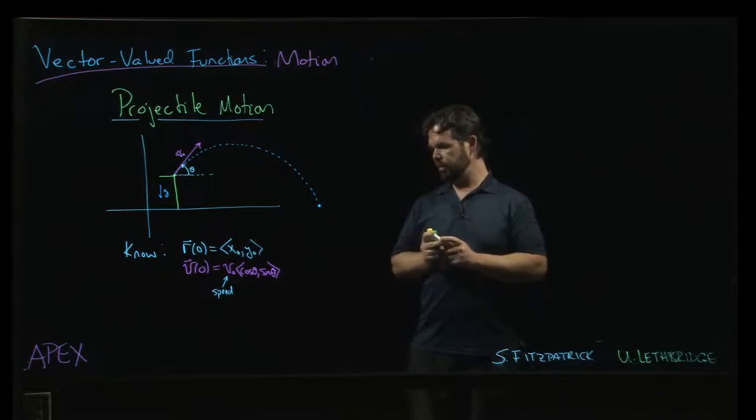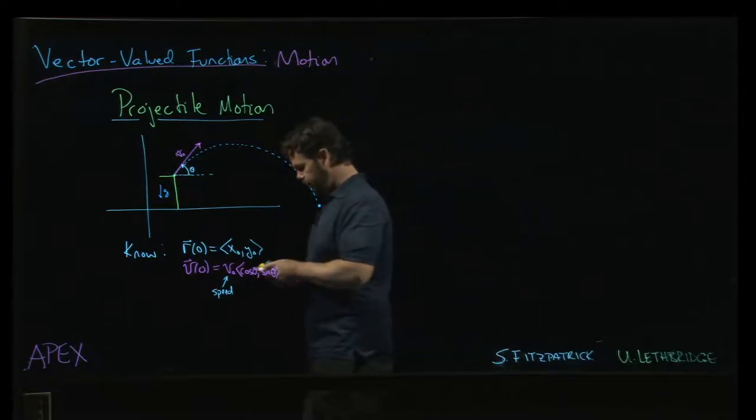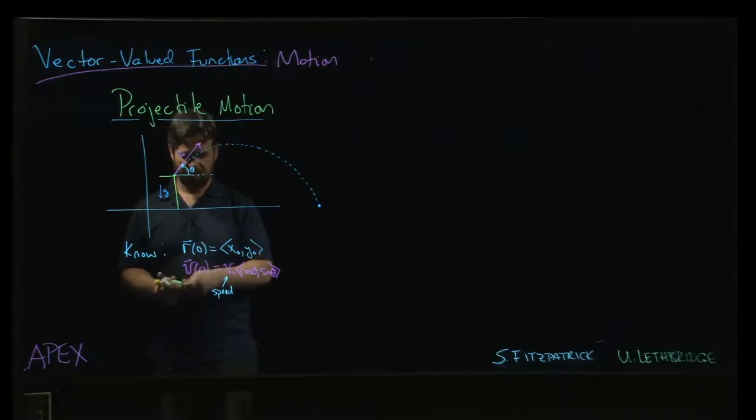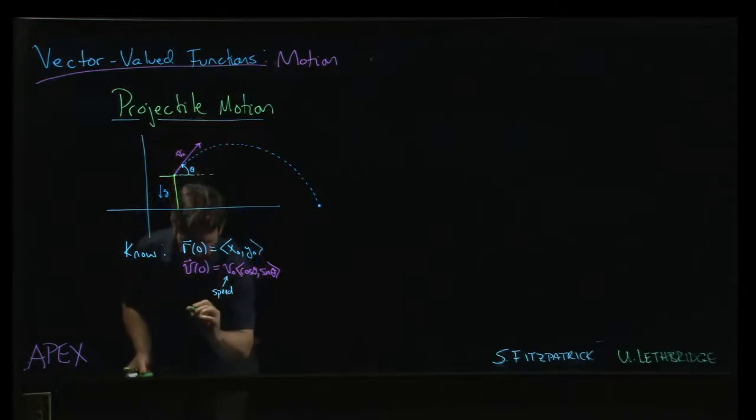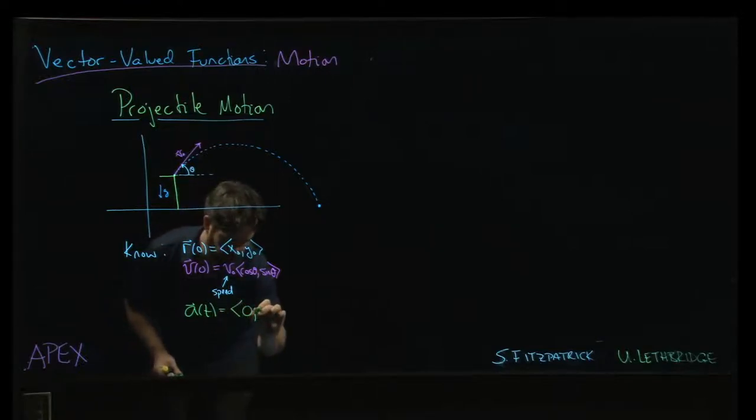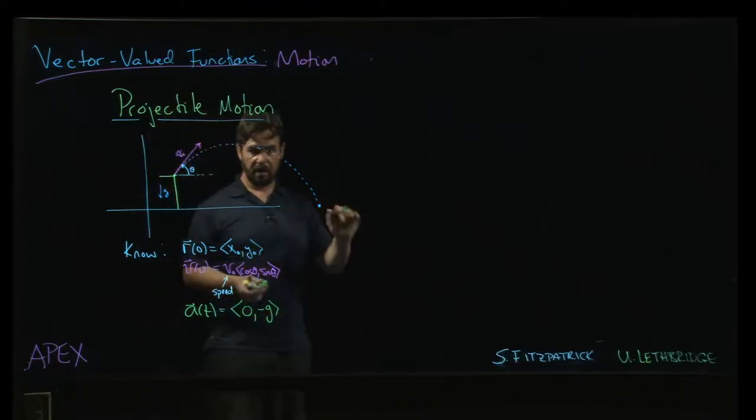The other thing we know is the acceleration. Now this one we can write as a function of time, but we're just going to write it like this: 0 and negative g.